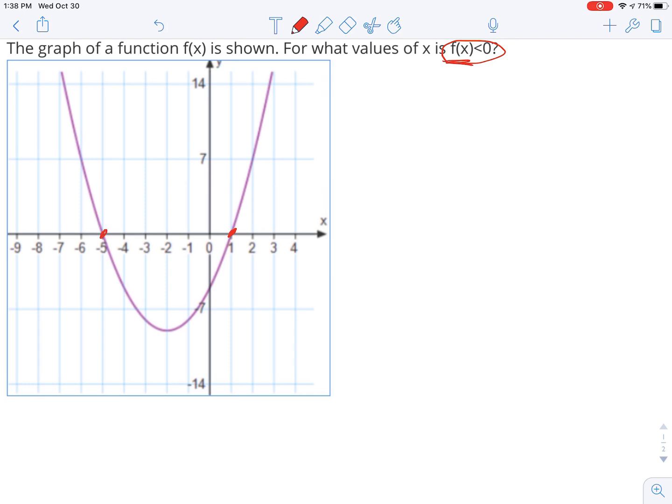Also remember that f(x) and y really mean the same thing. So it's really asking, when are the y values less than 0? So if you think about all the points on this graph, which x values give you y values that are negative, that are less than 0?